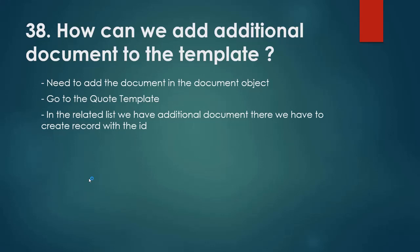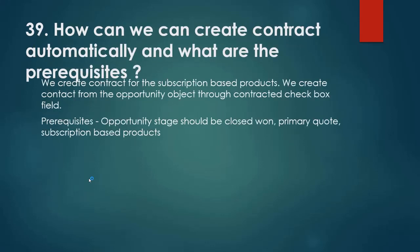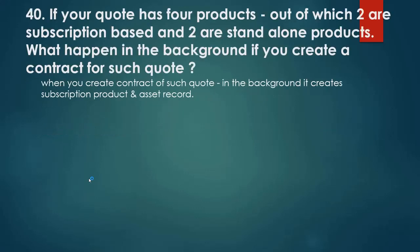How can we create a contract automatically and what are the prerequisites? We can create a contract from subscription-based products. We create a contract from the opportunity object through the contracted checkbox field. Prerequisites: the opportunity stage should be 'Closed Won', there should be a primary quote selected, and it should be a subscription-based product. If your quote has four products, two subscription-based and two standalone, what happens when you create a contract? In the background, it creates subscription records and assets.